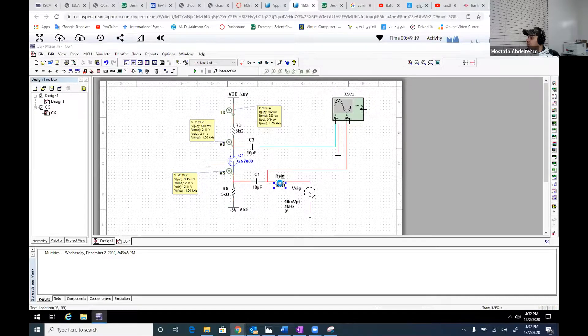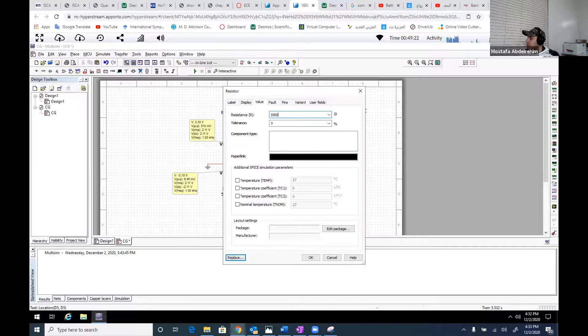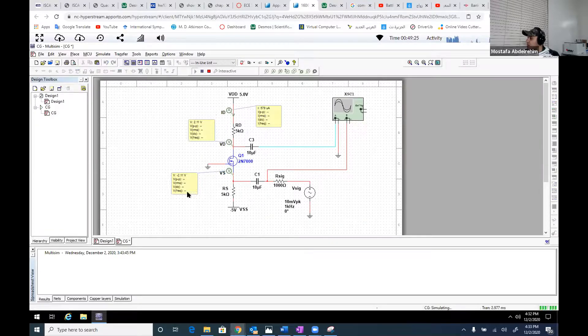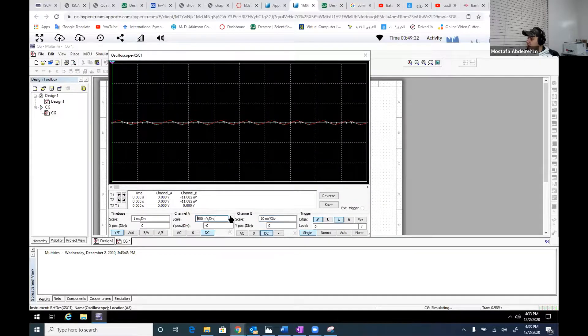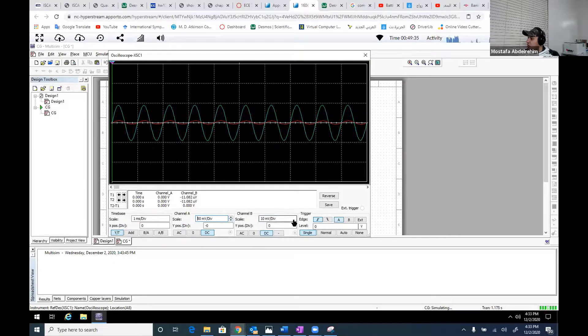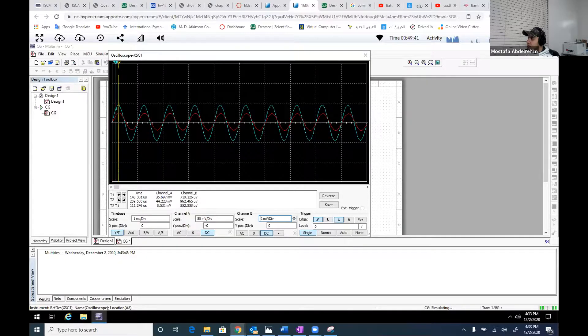Now the last step is to make this 1000 and let's run. Again, the DC doesn't change. Now we're going to increase a little bit the amplitude because it's now very small. Now the output is 89.545 and the input is still 20 millivolt. So this will give us 4.47 while we were expecting 4.5, so we're very close for that.